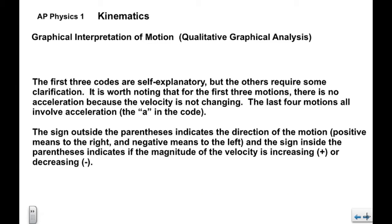The first three codes are pretty self-explanatory; the others require a little clarification. The first three motions involve no acceleration because the velocity is not changing. The last four all involve acceleration, which is why there's an A in the code. For the last four, the sign outside the parenthesis indicates the direction of motion — plus means to the right, minus means to the left. The sign inside indicates whether the magnitude of velocity is increasing (positive) or decreasing (negative).